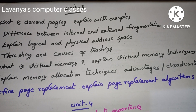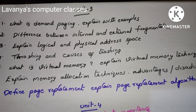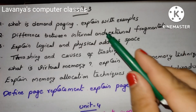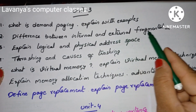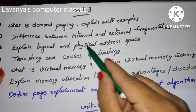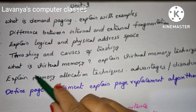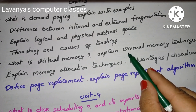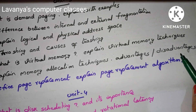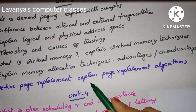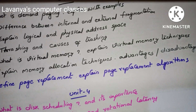Unit 3 important questions: read all questions from the first two units — if you read them you can easily write at least four questions. What is demand paging? Explain with examples. Explain the difference between internal and external fragmentation. Explain logical and physical address space. Explain thrashing and causes of thrashing. What is virtual memory? Explain virtual memory techniques. Explain memory allocation techniques with advantages and disadvantages, and define page replacement and explain page replacement algorithms — very very very important, read carefully.